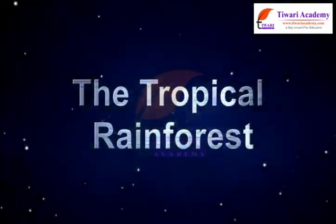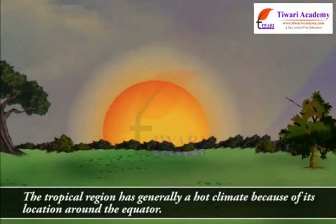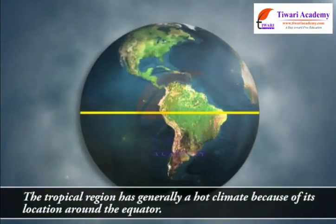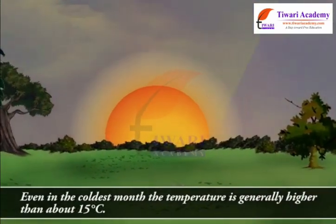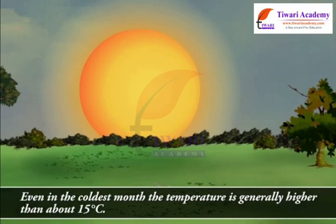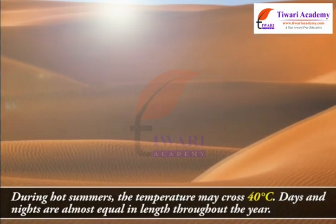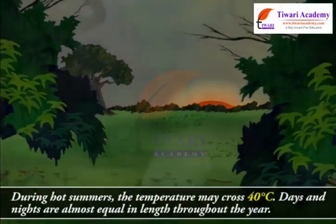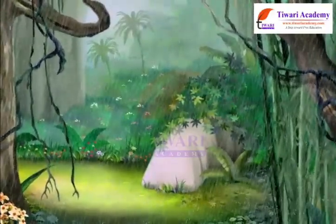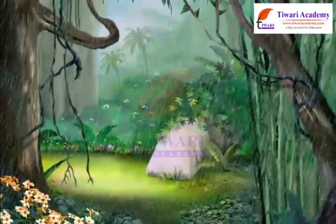The tropical rainforest: the tropical region has generally a hot climate because of its location around the equator. Even in the coldest month, the temperature is generally higher than about 15 degrees Celsius. During hot summers the temperature may cross 40 degrees Celsius. Days and nights are almost equal in length throughout the year. These regions get plenty of rainfall. An important feature of this region is the tropical rainforests.